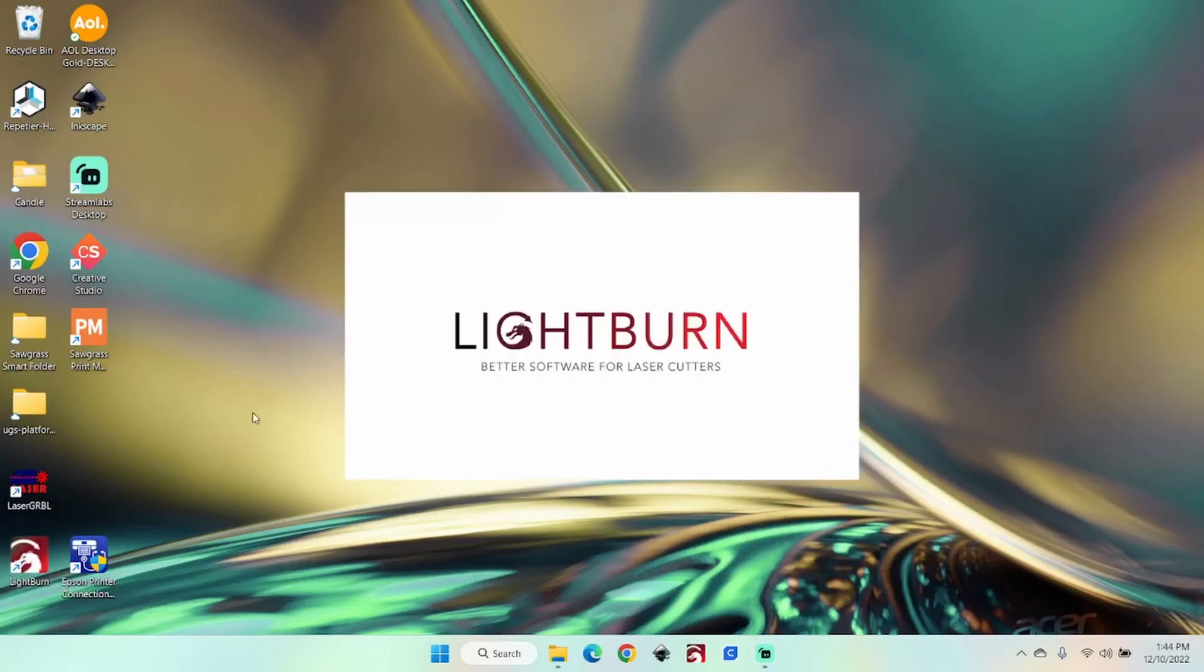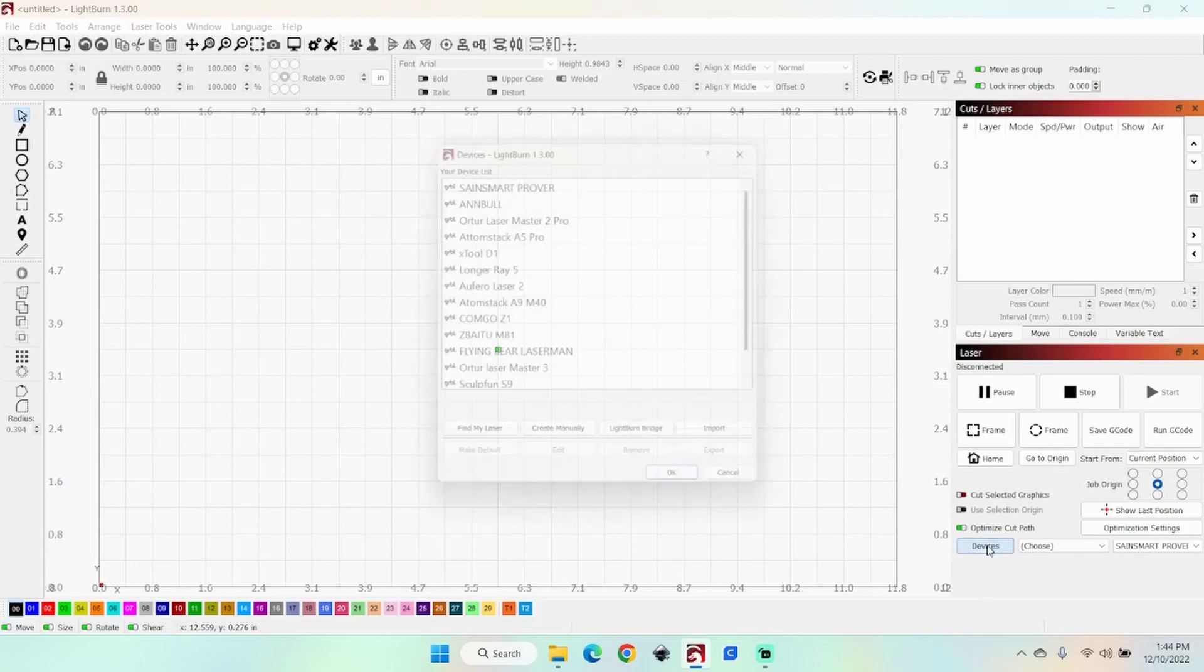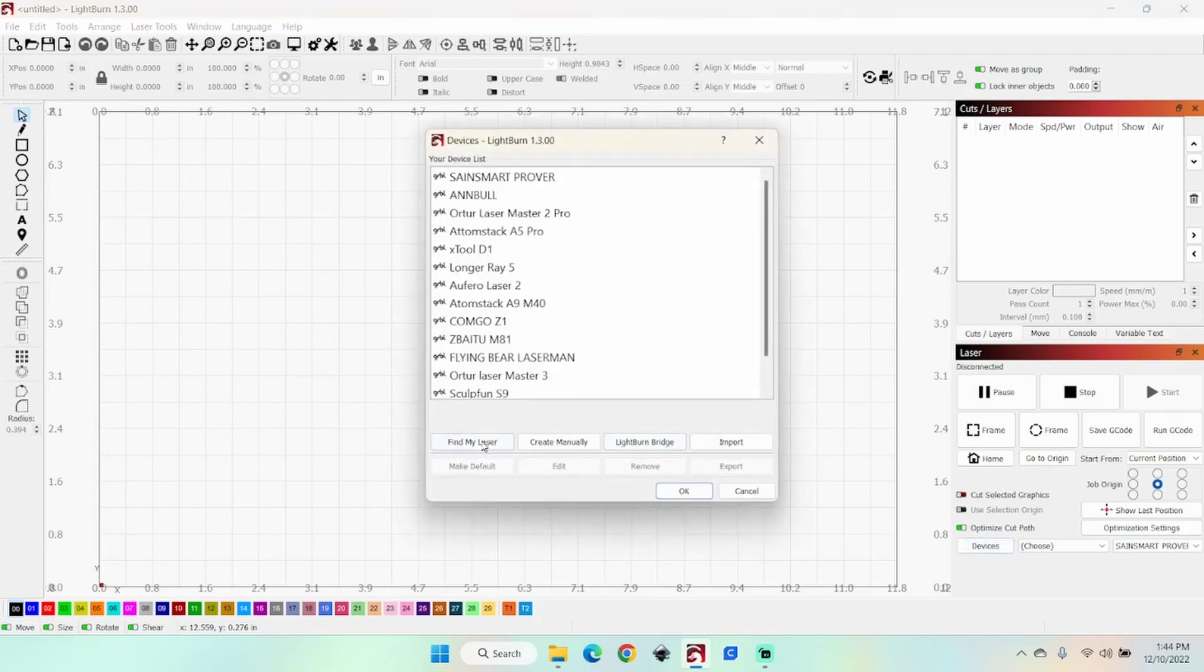I got to get this thing set up in Light burn, so open up Light burn here. Since I have a lot of other lasers, before I go to detecting the laser, I need to go over here to where it says devices. Right next to that's a COM number. I need to change that to choose, because if I leave that on COM 3, it is not going to find a laser.